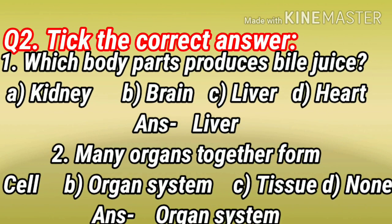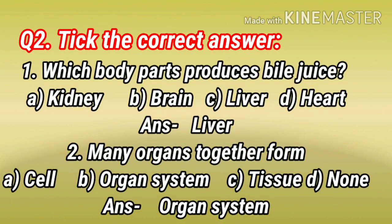Question number 2: Take the correct answer. Number 1: Which body part produces bile juice? A. Kidney. B. Brain. C. Liver. D. Heart. Answer: Liver.